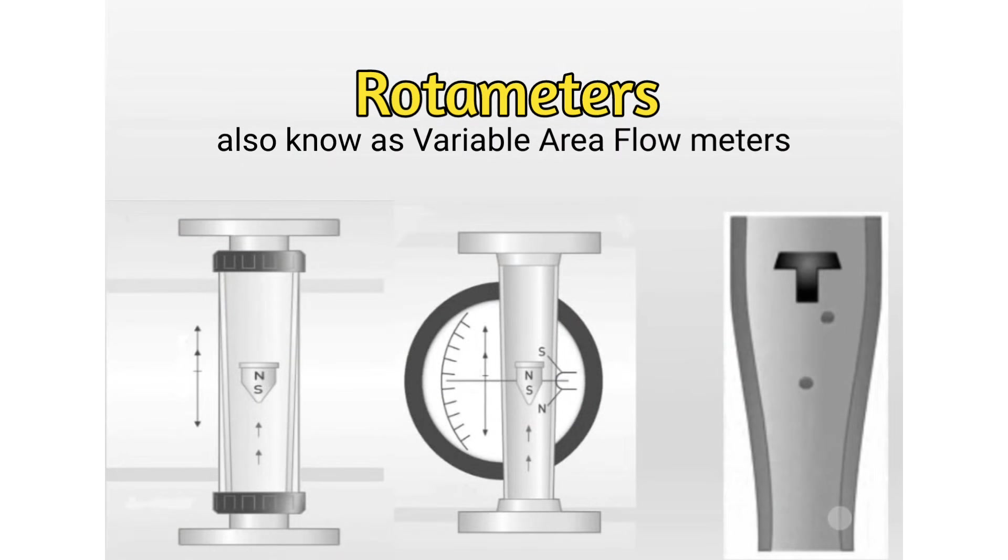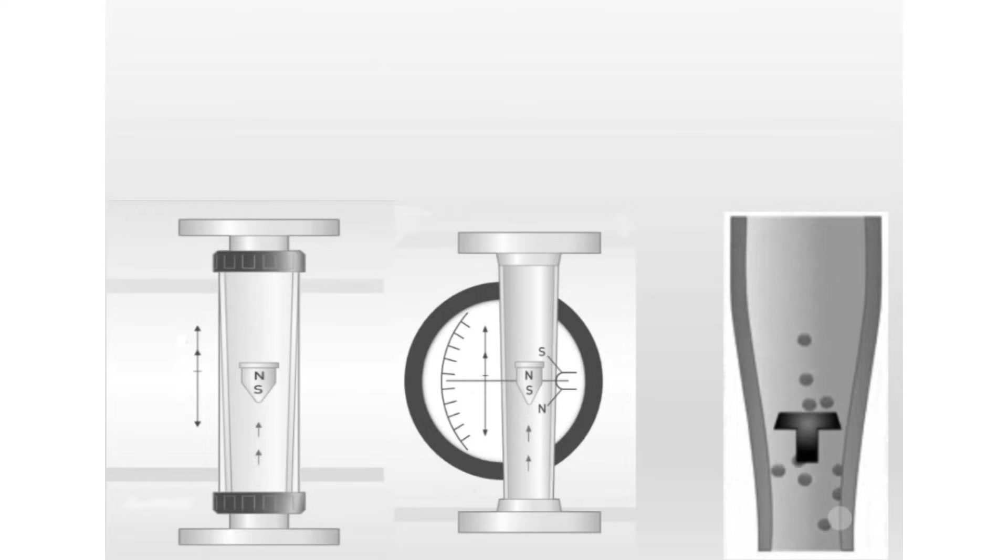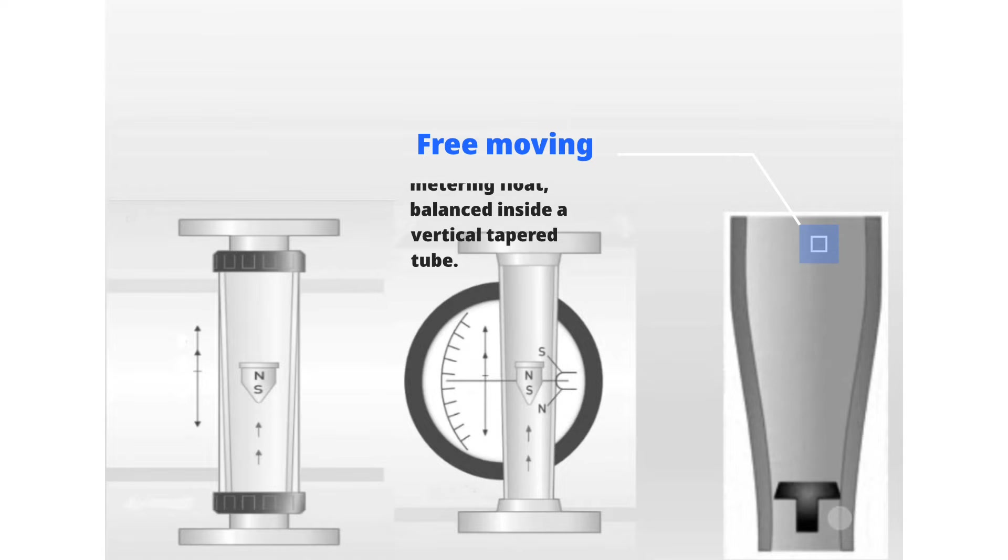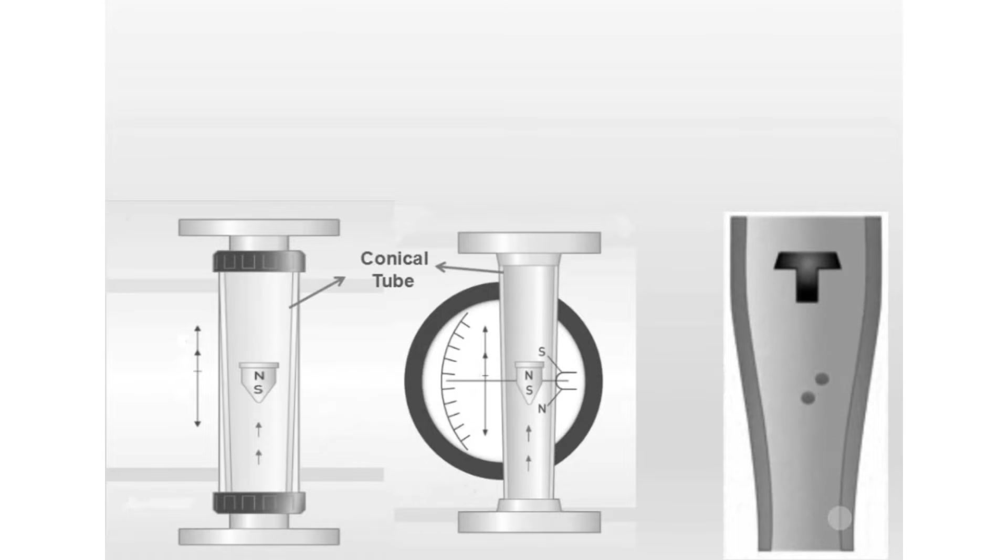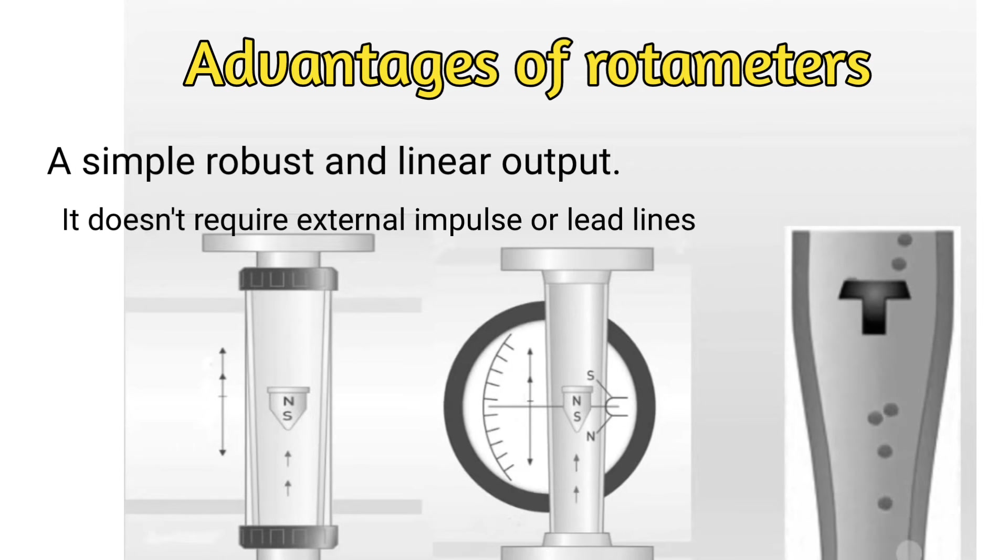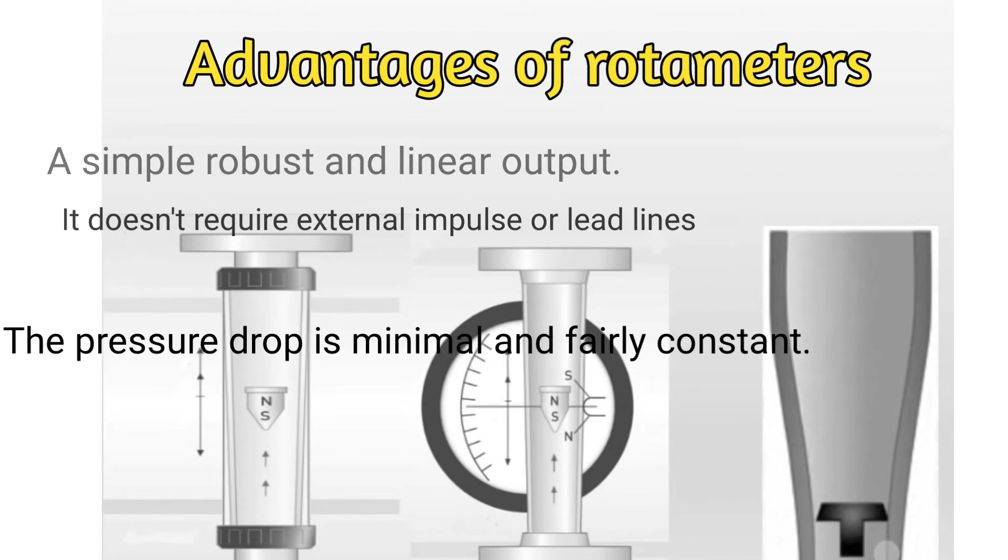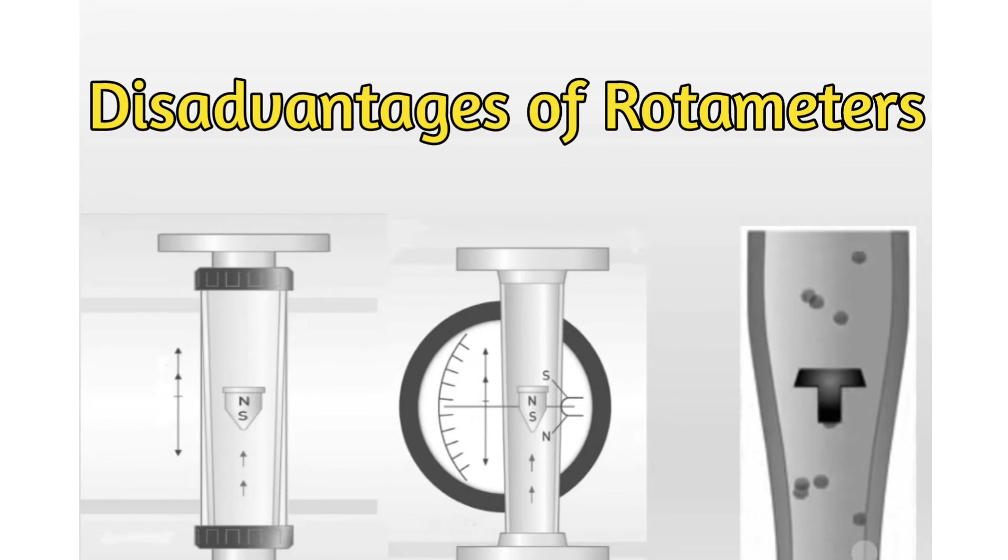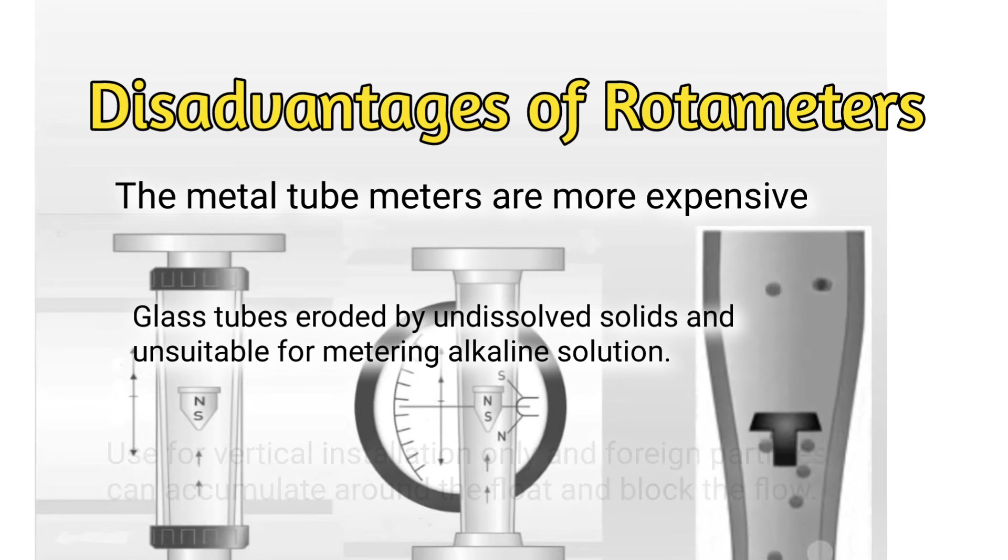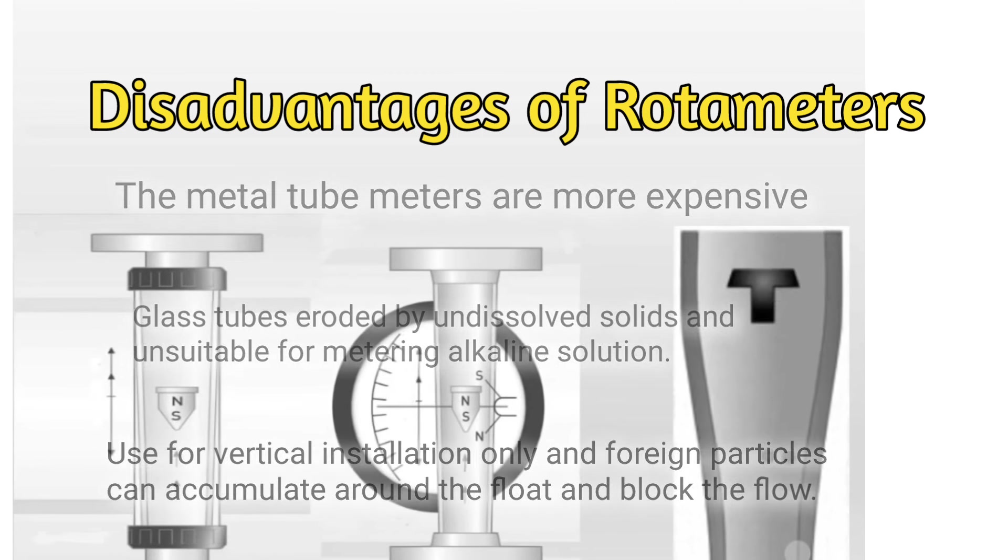Rotameter, also known as variable area flow meter. They are one of the most widely used common flow meter types. It consists of a vertical glass or plastic tube. The size of the tube varies from top to bottom, because of which it got its name as variable area flow meter. Inside the tube, there is a free moving metering float. This is balanced inside a vertical tapered tube. As the fluid flows upward, the float remains steady when the dynamic forces acting on it are zero. The flow rate is indicated by the position of the float relative to a calibrated scale. Advantages: simple, robust, and linear output, it does not require external impulse or lead lines, the pressure drop is minimal and fairly constant. Disadvantages: the metal tube meters are more expensive, glass tubes are eroded by undissolved solids and unsuitable for metering alkaline solution, used for vertical installation only, and foreign particles can accumulate around the float and block the flow.